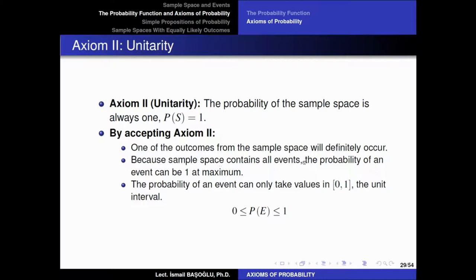Since the sample space contains all events, the probability of an event can also be 1 at maximum. When you combine the non-negativity axiom with the unitarity axiom, we understand that the maximum value for any probability is 1. As a result, by the combination of these two axioms, for any event in any sample space, the probability of an event should be a value between 0 and 1 — any real value within this unit interval. If you find a probability that is negative or greater than 1, then your calculation is wrong.